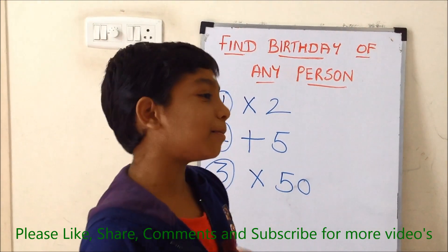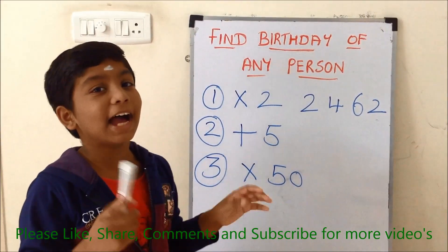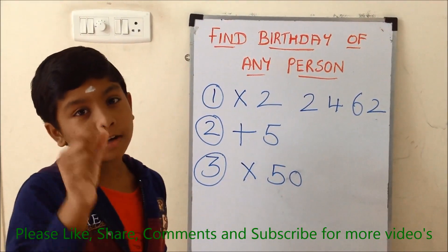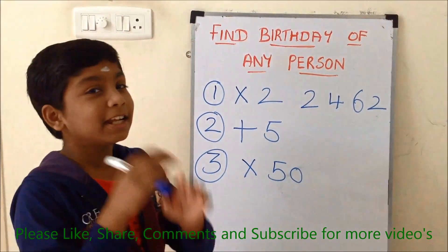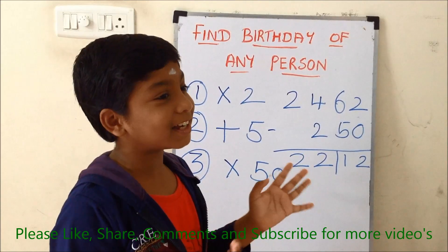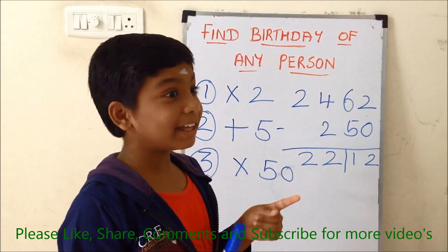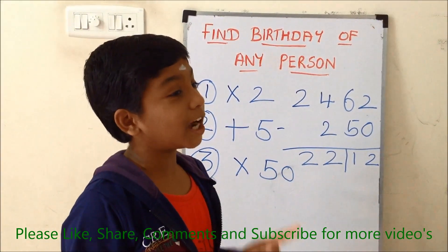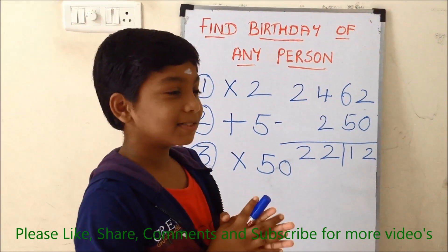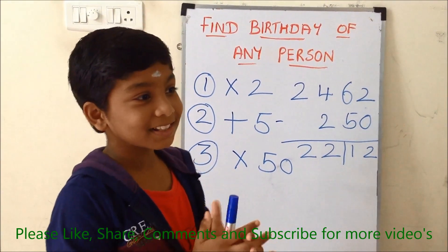Mom, can you say the number to me? Sure baby — 2, 4, 6, 2 is the number I got. Friends, the answer which my mother got is 2462. Now I am going to do a small trick to find the birthday of that person correctly. Mom, I have found the answer — if it is right, that is December 27th. Right mom? And I think it is the birthday of Ramanujan. Right mom? Exactly baby. Very nice. How interesting it is. Thank you mom. Superb baby, I am so much surprised to see this math trick.